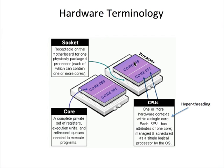Each core consists of what are called functional units, which are responsible for things like fetching and storing instructions, or doing integer or floating-point arithmetic. Recent generations of processors are able to share these functional units between two threads of execution. This technology is called hyperthreading. These multiple hardware contexts go under various names, but for our purposes we will call them CPUs. So this node has two processors, four cores, and eight CPUs.